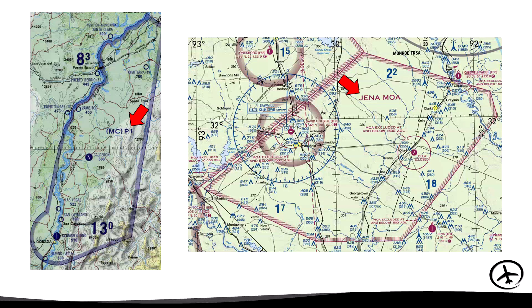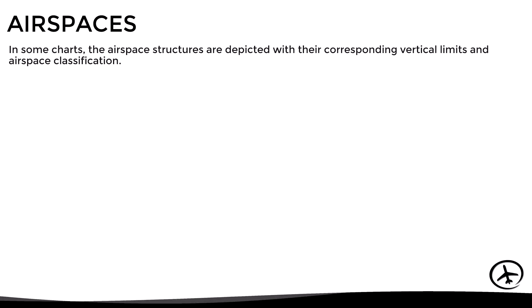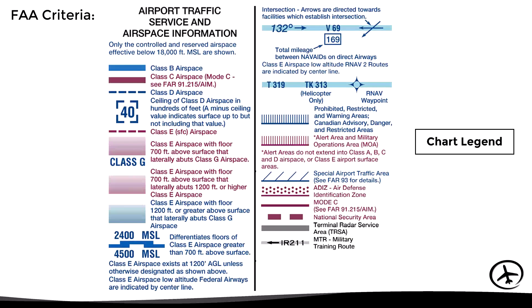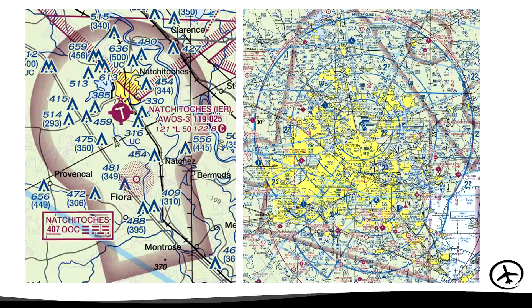Apart from these, some charts also include other airspace structures such as terminal areas and control zones with their corresponding vertical limits and airspace classification. However, some charts may have different criteria to depict these airspaces and sometimes include more information, as we can see in this example with the FAA criteria.